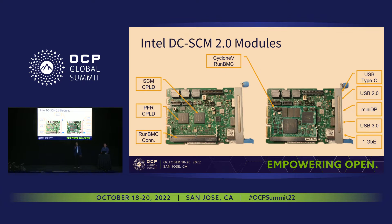If we look closer at those modules, we have two MAX10 devices on the left-hand side. You can see an SCM CPLD implementing the LTPI standard that is part of the DCSEM 2.0. We have another MAX10 handling PFR — that's Intel's root of trust solution. And also a RunBMC slot that can host a different BMC SOC: either our RunBMC module with Cyclone 5, or an ASP2600 or NuVoton chip. We actually have an ASP2600 RunBMC module as well in our Experience Center booth, so you can come around and look at those modules too.